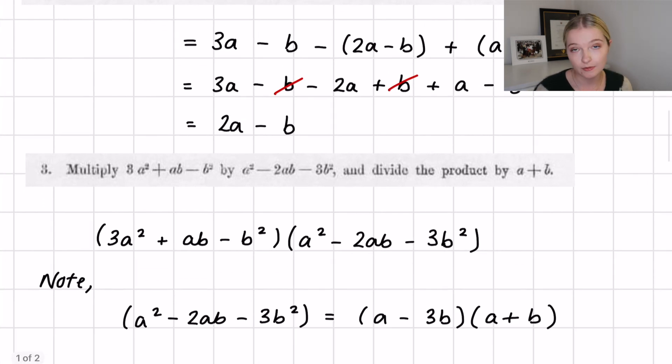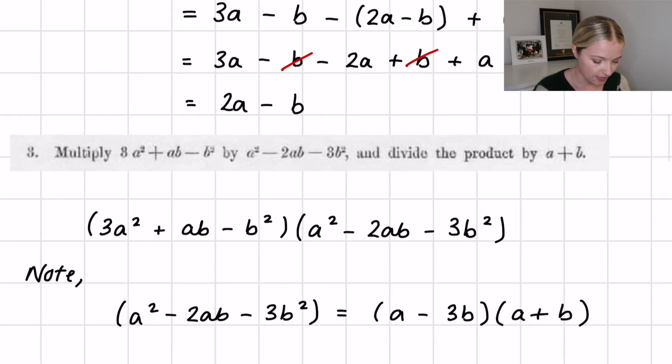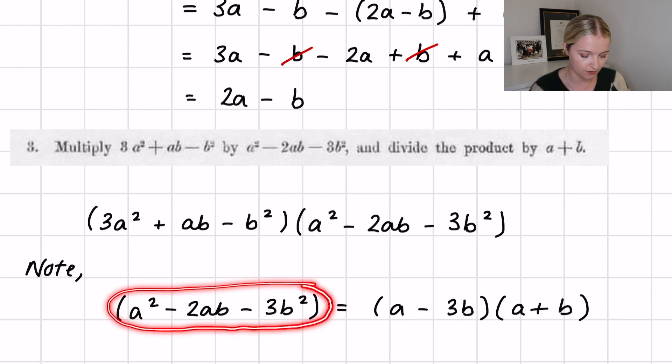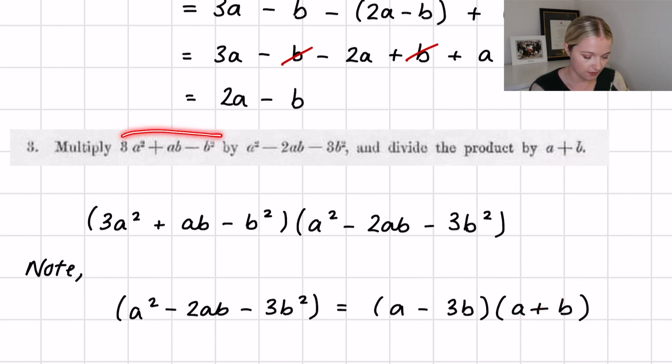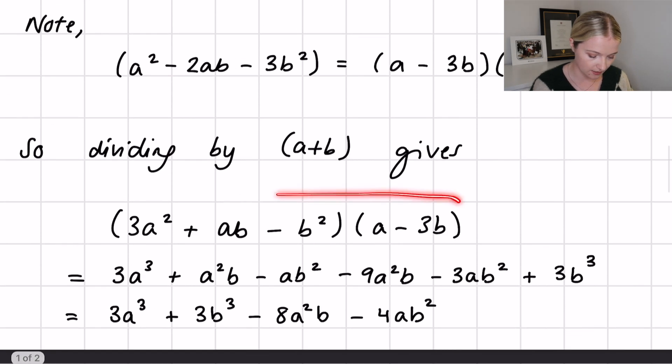Now question 3 is a multiplication question. It says multiply 3a squared plus ab minus b squared by a squared minus 2ab minus 3b squared, and we want to divide it by a plus b. Now something to note immediately with this problem is we can see that a squared minus 2ab minus 3b squared, we can simplify that and we can factorize it into this form. So when we divide by a plus b, this just cancels. The hint for this question was basically just taking what we were going to multiply and noting that we can factorize it and take out an a plus b, so I just expanded it out and I got this form for it here.